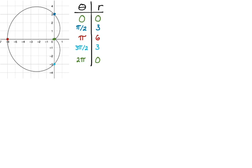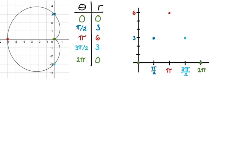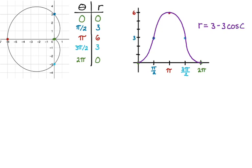We're going to take this table and turn it into a graph in rectangular. Plot your points — you can definitely put a curve through it, and that looks like a negative cosine graph. So writing the equation: r equals — the sinusoidal axis is three, it's negative cosine so minus, I can go three up and three down from the sinusoidal axis so the amplitude is three, and it's cosine. So: r = 3 - 3cos(θ). That's the equation for this cardioid.